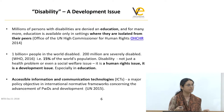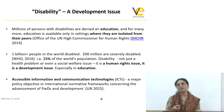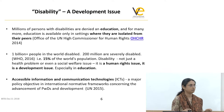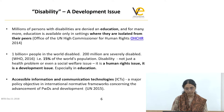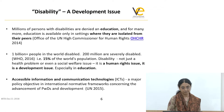Governments needed to ratify what the United Nations was publishing and create and pass bills in their countries. Along with that, assistive technologies were becoming another policy objective for the United Nations. By 2015, accessible ICTs became a major policy objective for persons with disabilities.